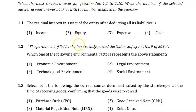Question 1.2: 'The Parliament of Sri Lanka has recently passed the Online Safety Act No. 9 of 2024.' They ask which environmental factor represents this statement. This is not an economic matter — it is clearly a legal matter, as an Act falls under the legal environment. So the answer is Legal Environment.